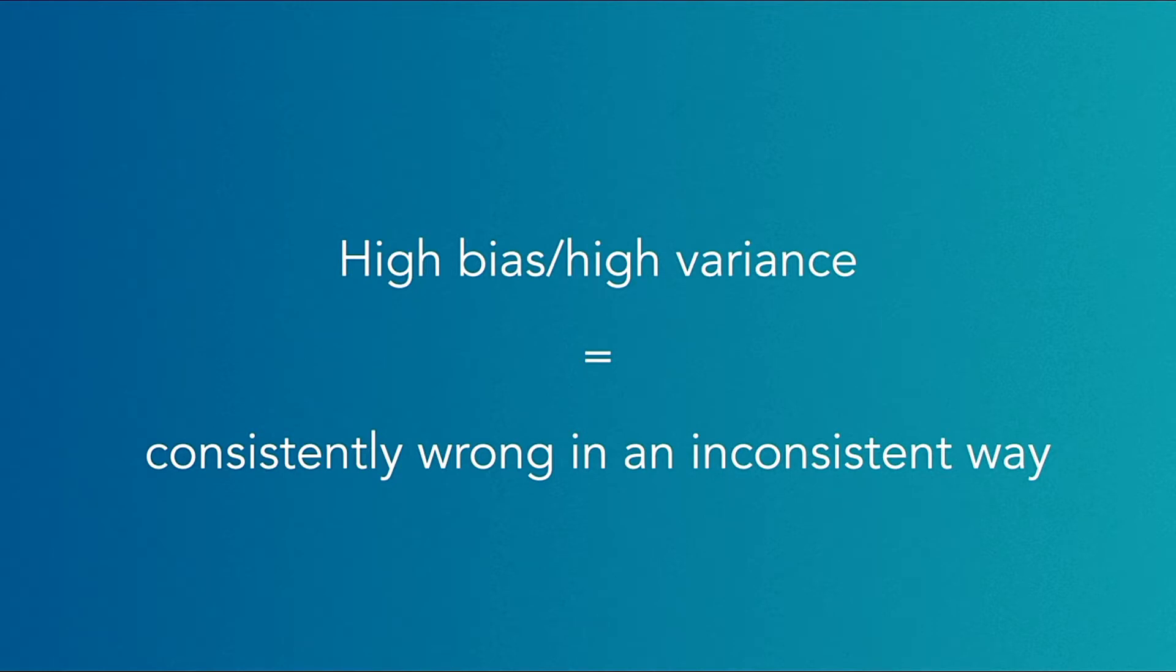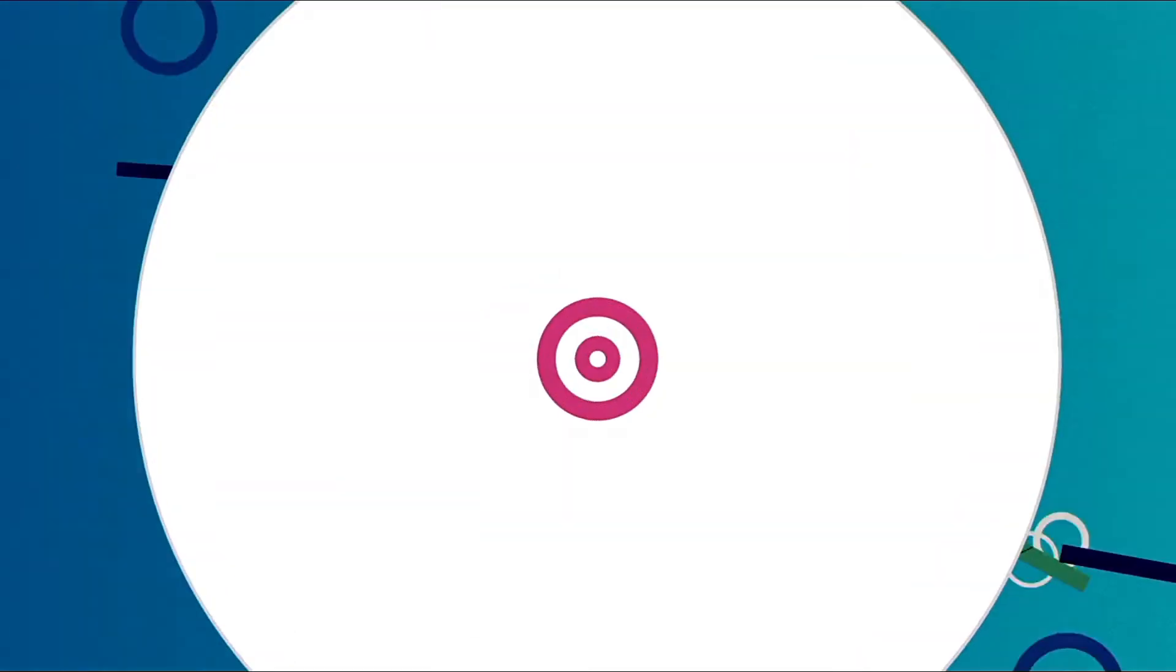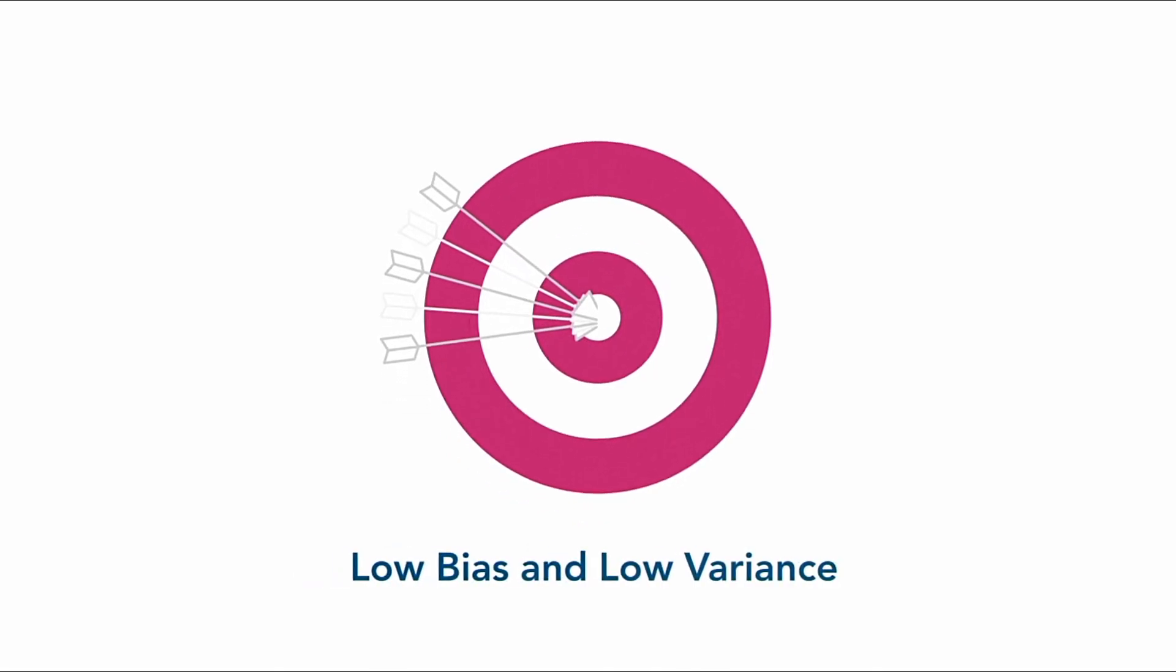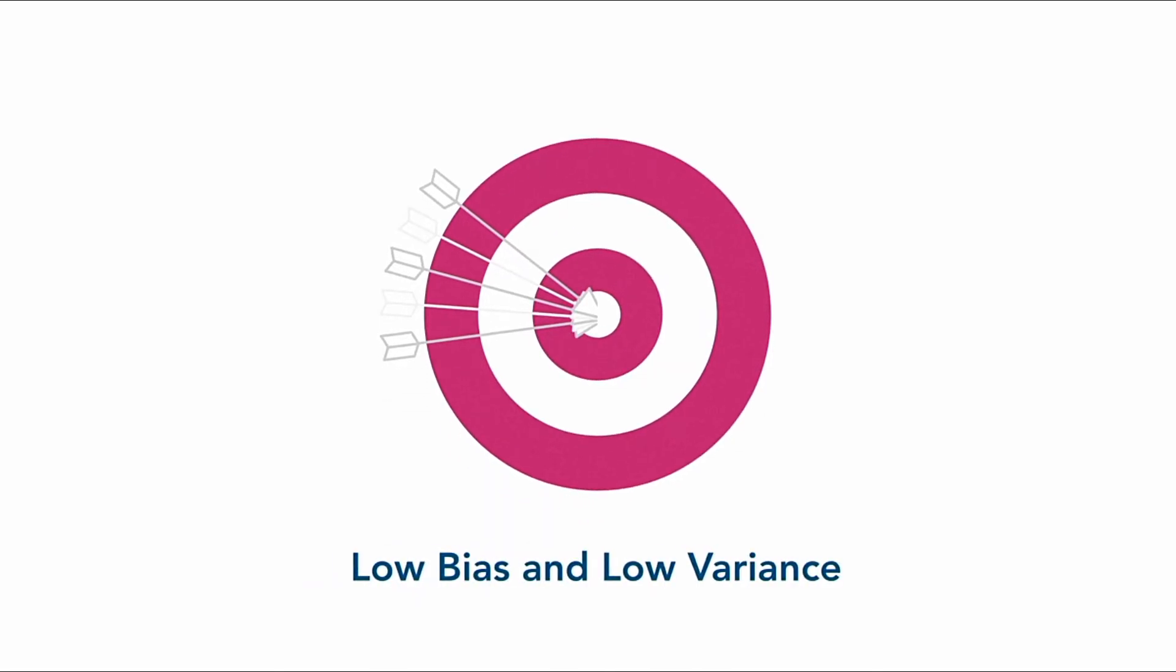Think of it this way. Imagine at an archery range an archer effortlessly let loose his five arrows, which landed in the center of the target. His target is a good example of low bias and low variance. All five of his arrows were gathered tightly in the center of the bullseye.